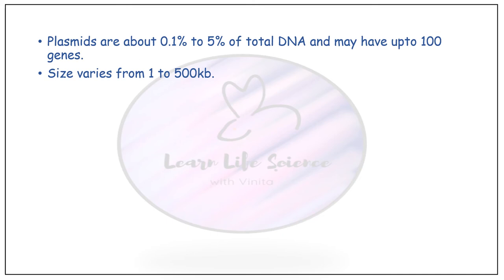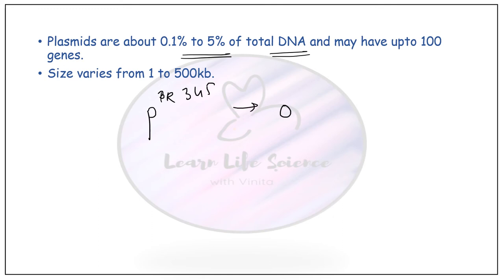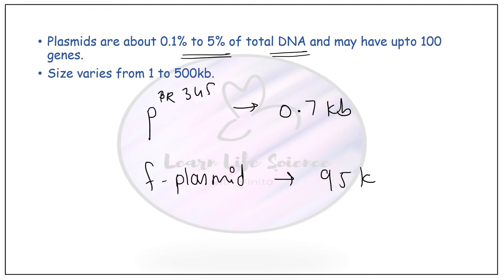Regarding size and amount: plasmids cover about 0.1% to 5% of the total DNA and can carry up to 100 different genes. The size of a plasmid can vary from 1 to 500 kb. For example, a plasmid termed pBR345 is around 0.7 kb, while the F plasmid is 95 kb. Size varies with the strain or species of bacteria.